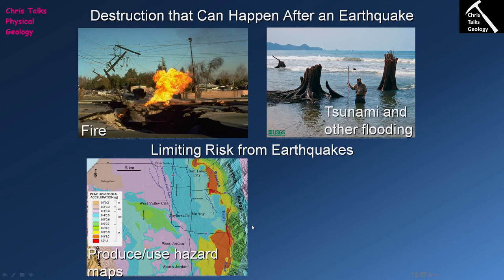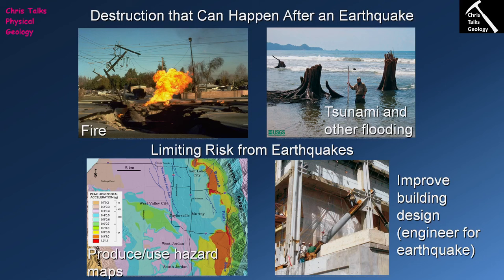One of the most common ways in which the risks of earthquakes are limited is improving building design. You can increase the amount of steel in your cement, which offers your building a much greater degree of stability. You can also increase the depth of the foundation, which will once again give your building increased stability.